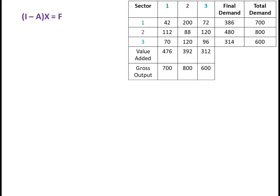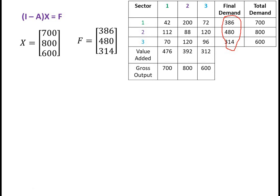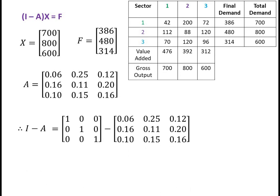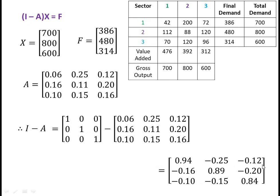Now we have to prove the Leontief input-output system: (I minus A) times x equals f, where x is the output vector of [700, 800, 600] and f is the final demand vector of [386, 480, 314]. We have already found the technology matrix A. Therefore, (I minus A) is the matrix with values 0.94, minus 0.25, minus 0.12 in the first row; minus 0.16, 0.89, minus 0.20 in the second row; and minus 0.10, minus 0.15, 0.84 in the third row.